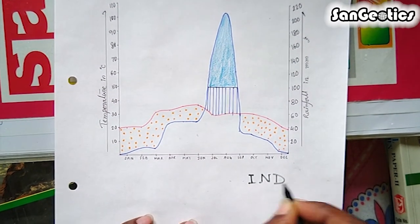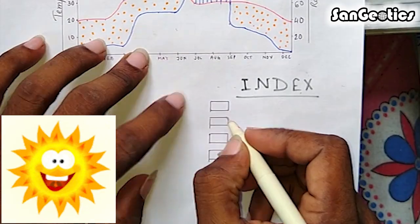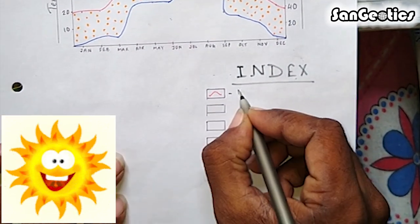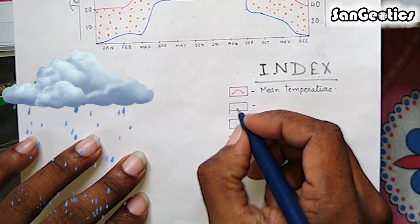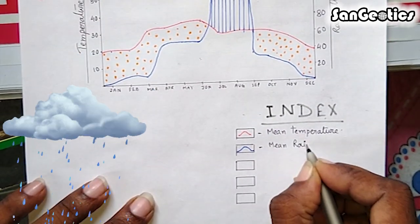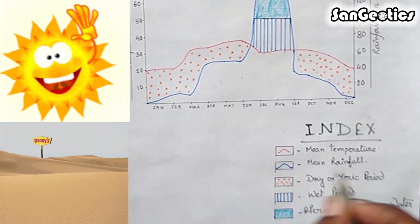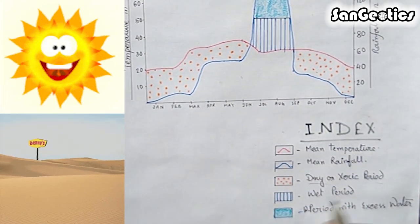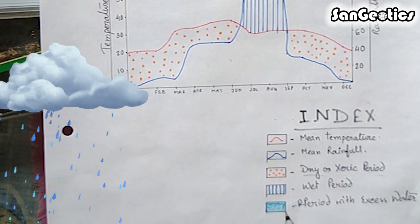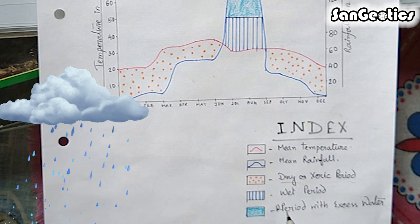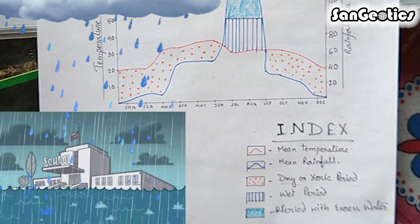Now we have to construct an index. First, five boxes are drawn. Red line indicates mean temperature, blue line indicates mean precipitation, brown dots indicate dry or xeric period, blue vertical lines indicate wet period, and blue coloring indicates precipitation period with excess water.